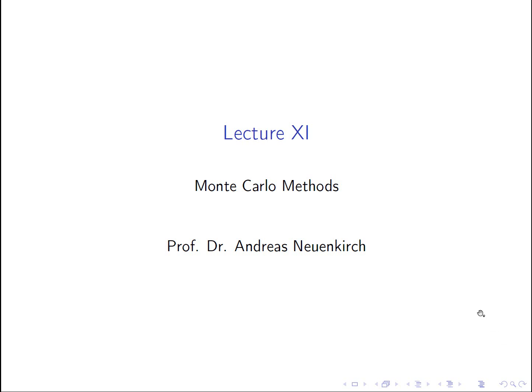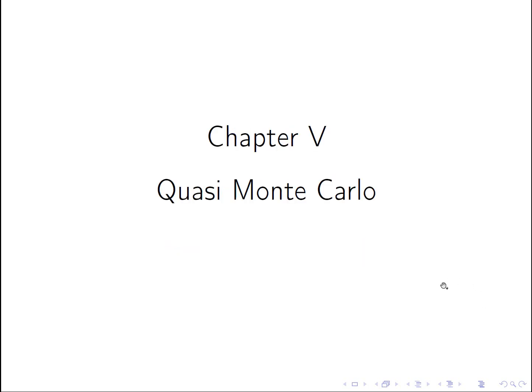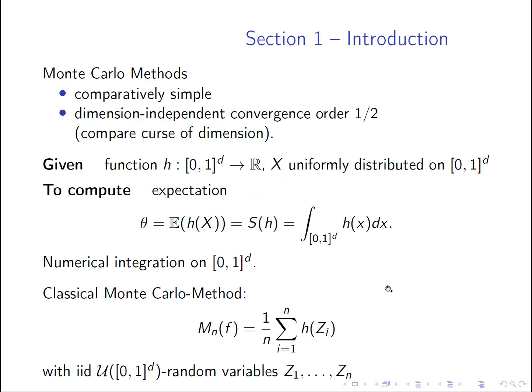Welcome to lecture number 11. The last two lectures we spoke about variance reduction methods to improve the variance cost efficiency of our Monte Carlo estimators. Today I would like to speak about quasi Monte Carlo. Quasi Monte Carlo is a related method — some people call it a variance reduction method, but in fact it's different, though related. The convergence order of one-half for Monte Carlo is independent of dimension.